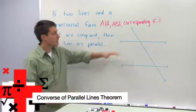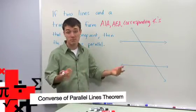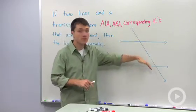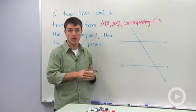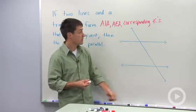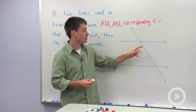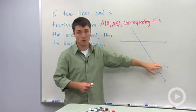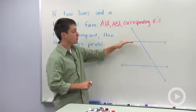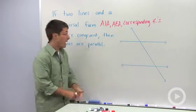The question is if we have two lines that might be parallel and they're intersected by a transversal, can we do the converse of the parallel lines theorem? Which says if we have alternate interior angles, alternate exterior angles, or corresponding angles that are congruent, is that enough to say that these two lines are parallel?